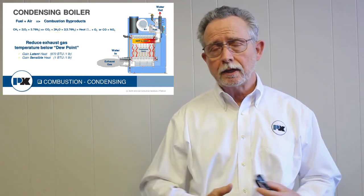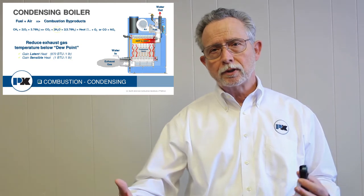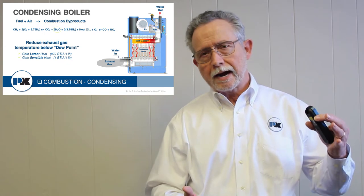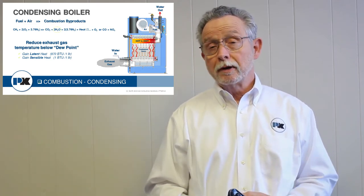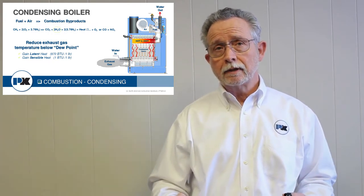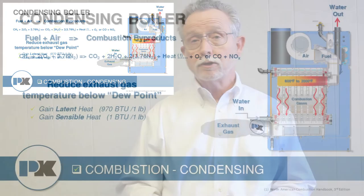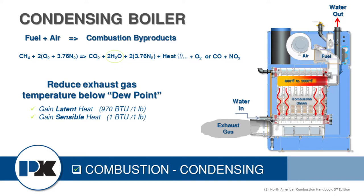When running a system, one factor that contributes to the condensing process is the return water temperature, because that return water washes over the bottom of the heat exchanger — the first contact with the combustion gas exiting the boiler. With a 20 to 1 turndown, if we have a return water temperature of 120 degrees, that's above the 117 degree dew point, so we're not going to condense in the boiler. Condensation in the stack looks nice but does nothing for efficiency unless we actually capture that latent heat.